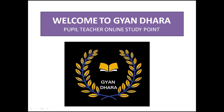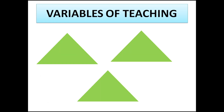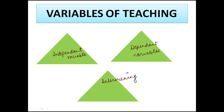Welcome to Gyan Dhara Pupil Teacher Online Study Point and basic concept of teaching. Today we are going to study the next part — we are going to discuss variables of teaching. In the teaching-learning process, there are three types of variables: one is independent variable, second one is dependent variable, and third one is intervening variables. These are the three variables of teaching.